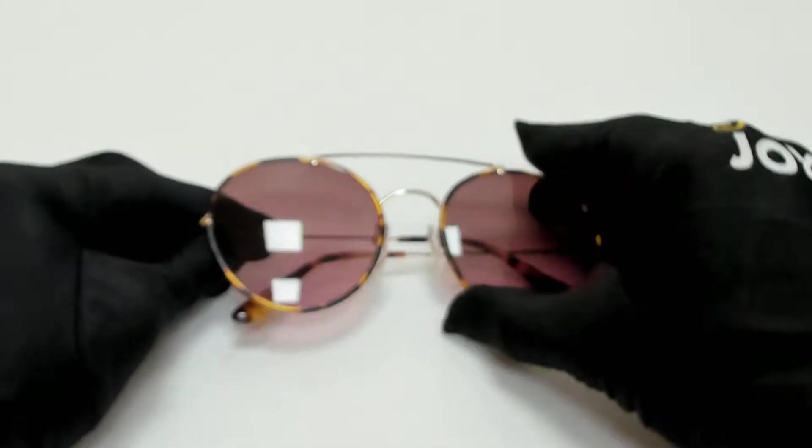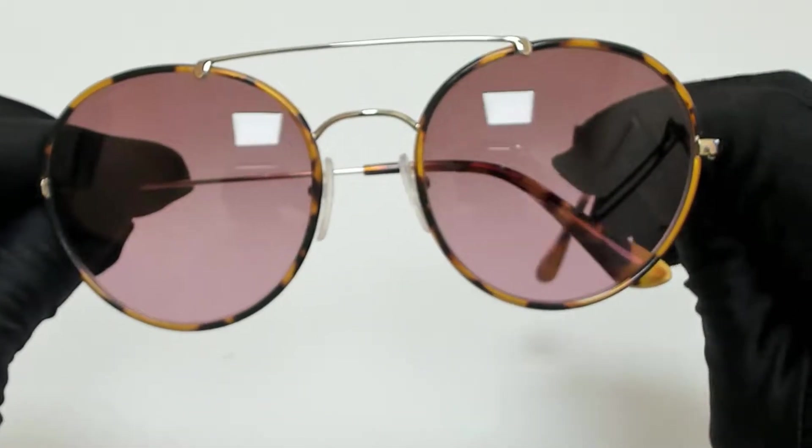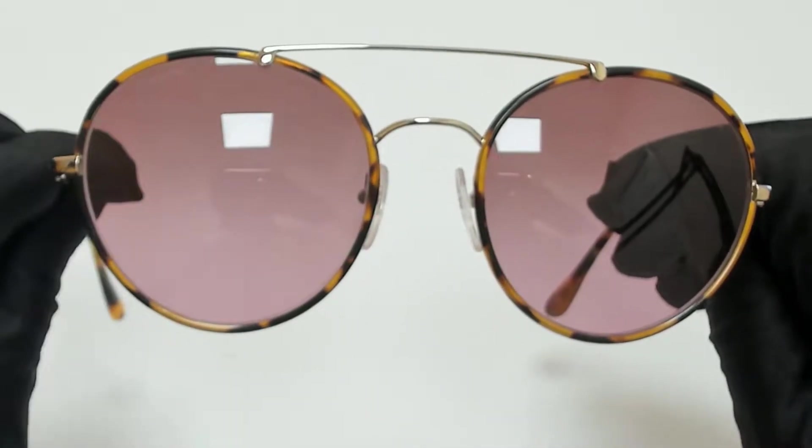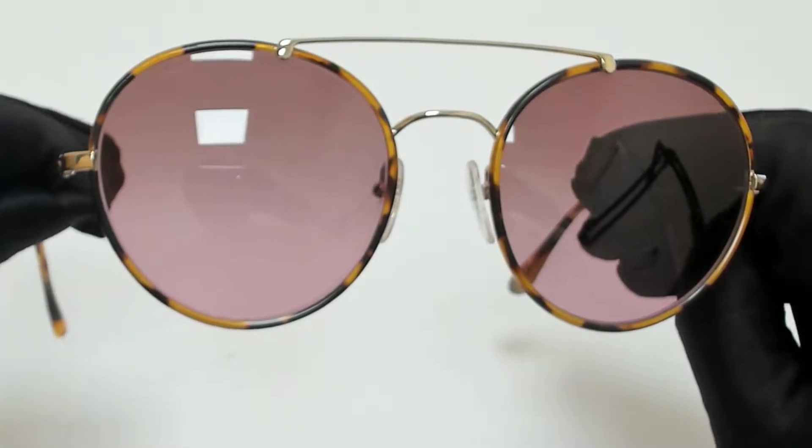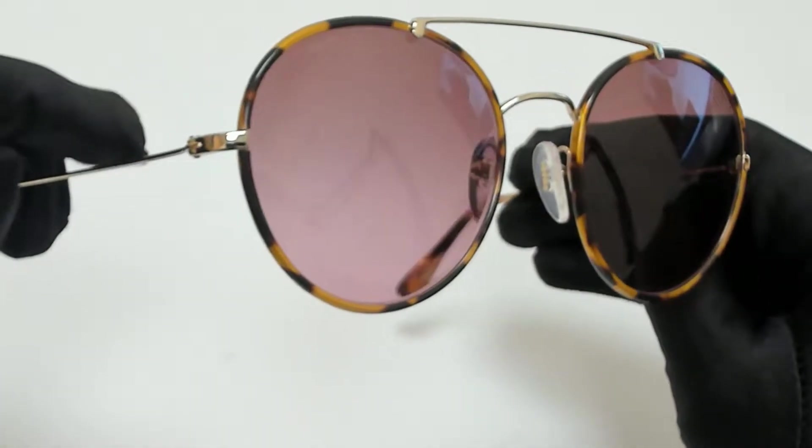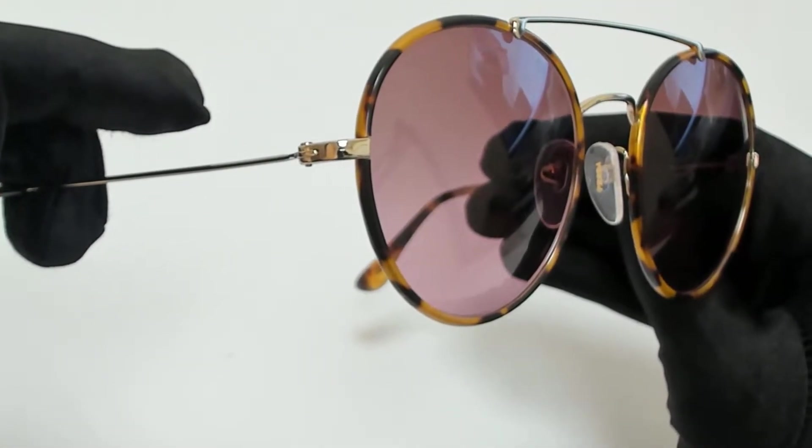Hi everyone, greetings from joylot.com. I'll be demonstrating Prada sunglasses, model SPR 53P, color code 7S05P1.